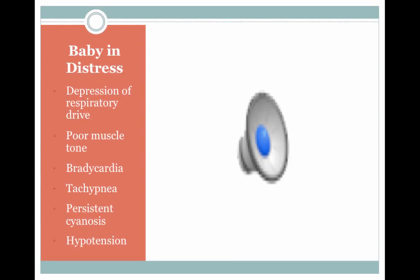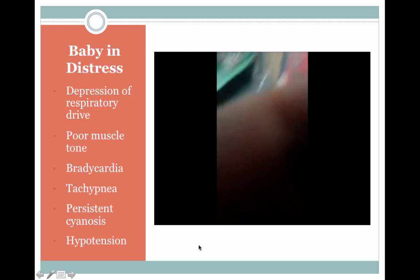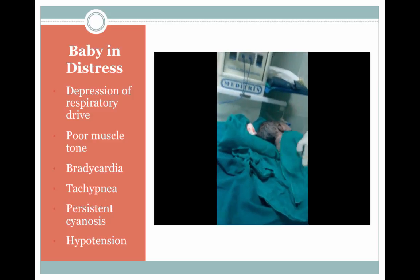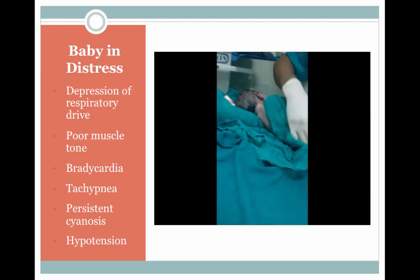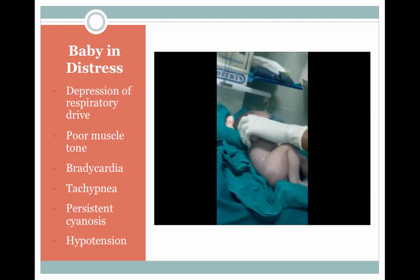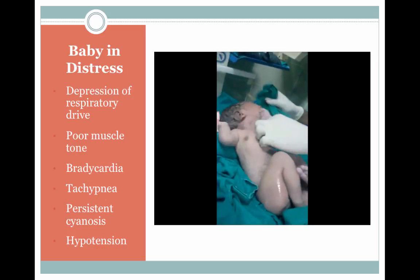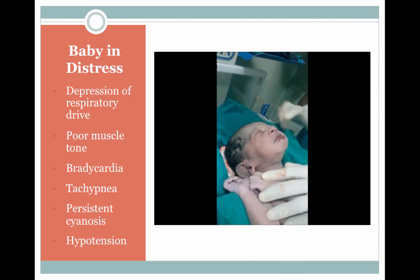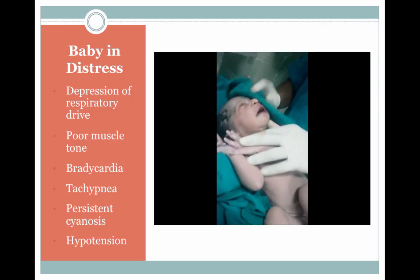Signs of distress in babies include depression of respiratory drive, poor muscle tone, bradycardia, tachypnea, persistent cyanosis, and hypotension. In a video example, a baby is born with poor respiratory drive, poor muscle tone, and cyanosis. After following the initial steps — providing warmth, stimulation by drying, and positioning the head to open the airway — the newborn starts to cry and shows improvement in color.